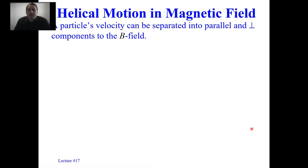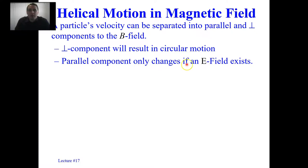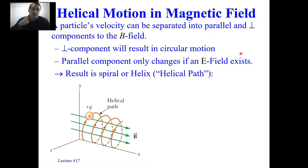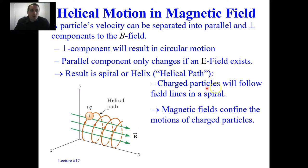Let's talk about helical motion in a magnetic field. A particle's velocity can be separated into its parallel and perpendicular components to the magnetic field. The perpendicular component results in circular motion, while the parallel component only changes if an electric field exists. The result is a spiral or helix — a helical path. This is often the route charged particles follow when following these magnetic field lines. Magnetic fields tend to confine the motion of charged particles, making them hug magnetic field lines.